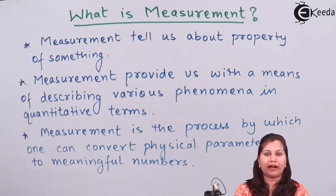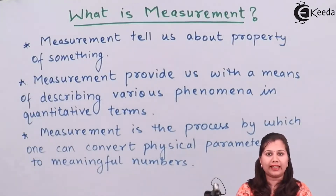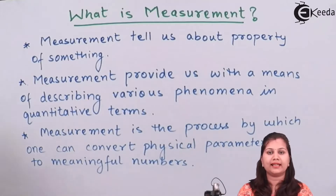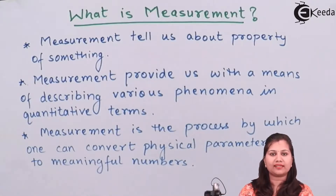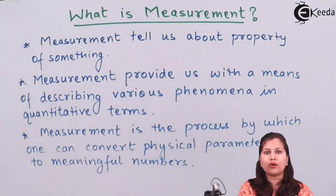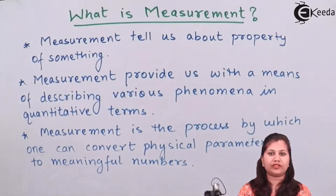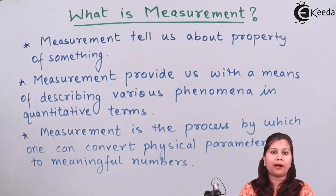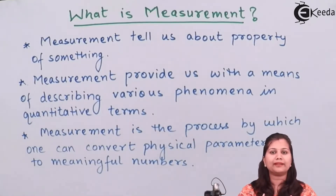Like if we want to find out the length of a scale — how long that scale is — that is called measurement. There is a famous quote: whatever exists in nature, it exists in some amount. If air is present in the atmosphere, there is some amount of that air. If water is present in the sea, there is an amount of that water. Whatever exists in nature has some amount, and the calculation of that amount is called measurement.